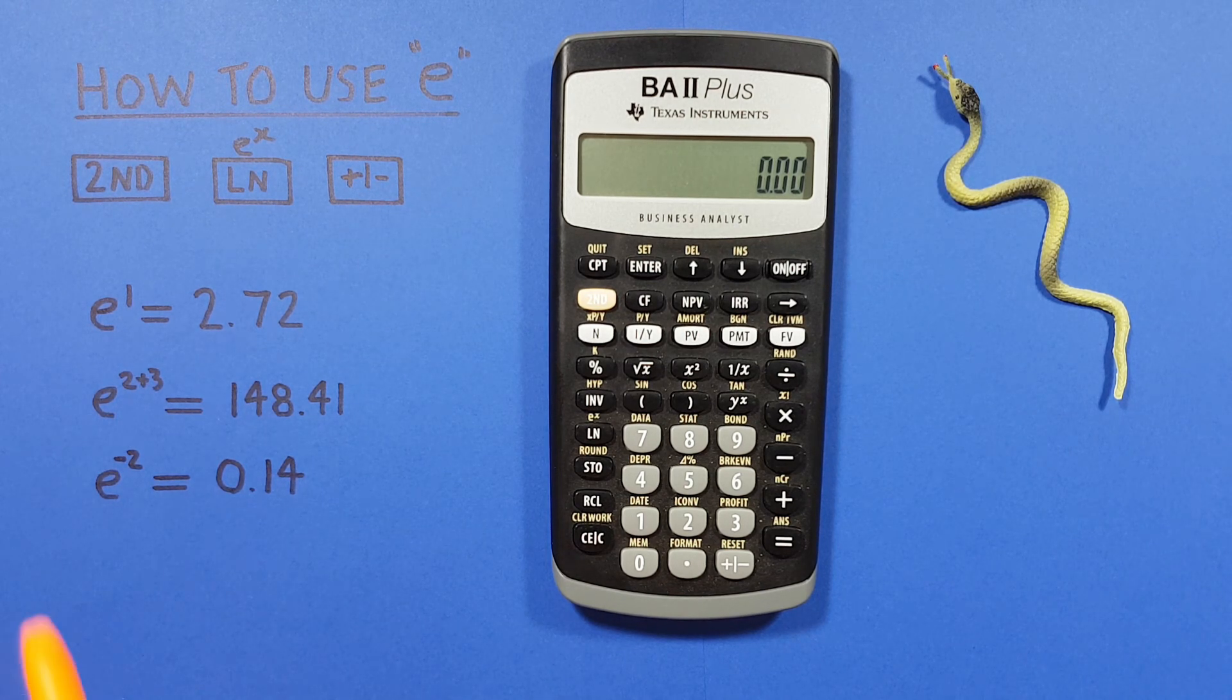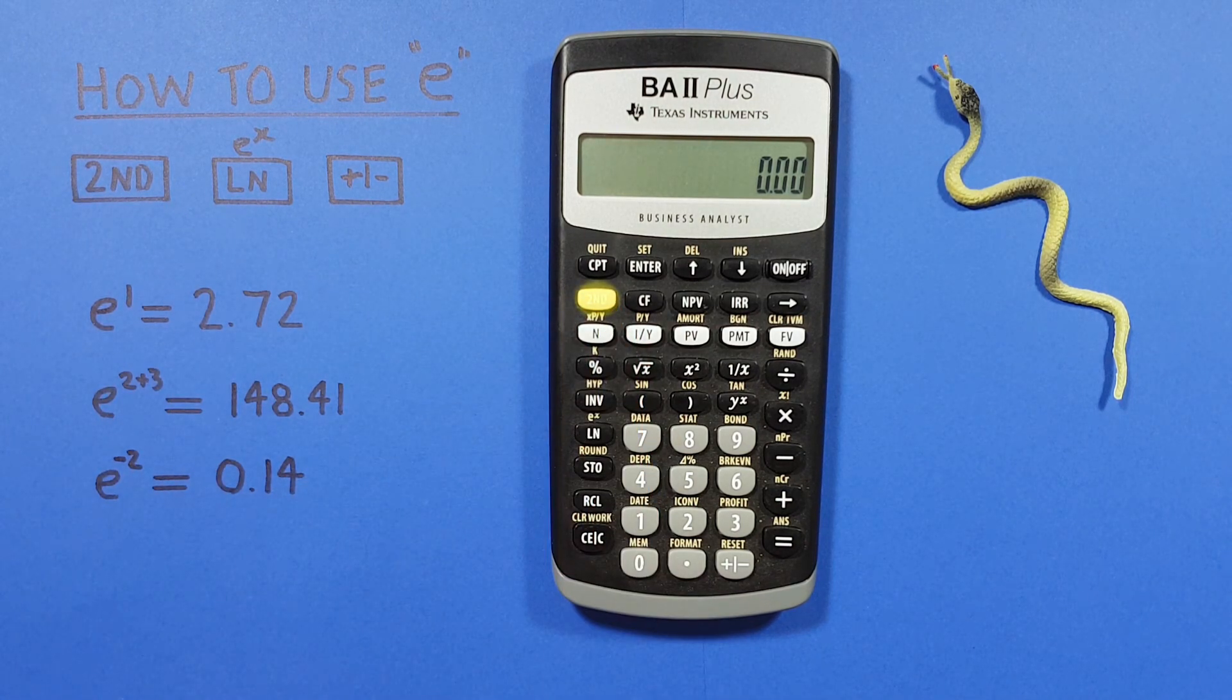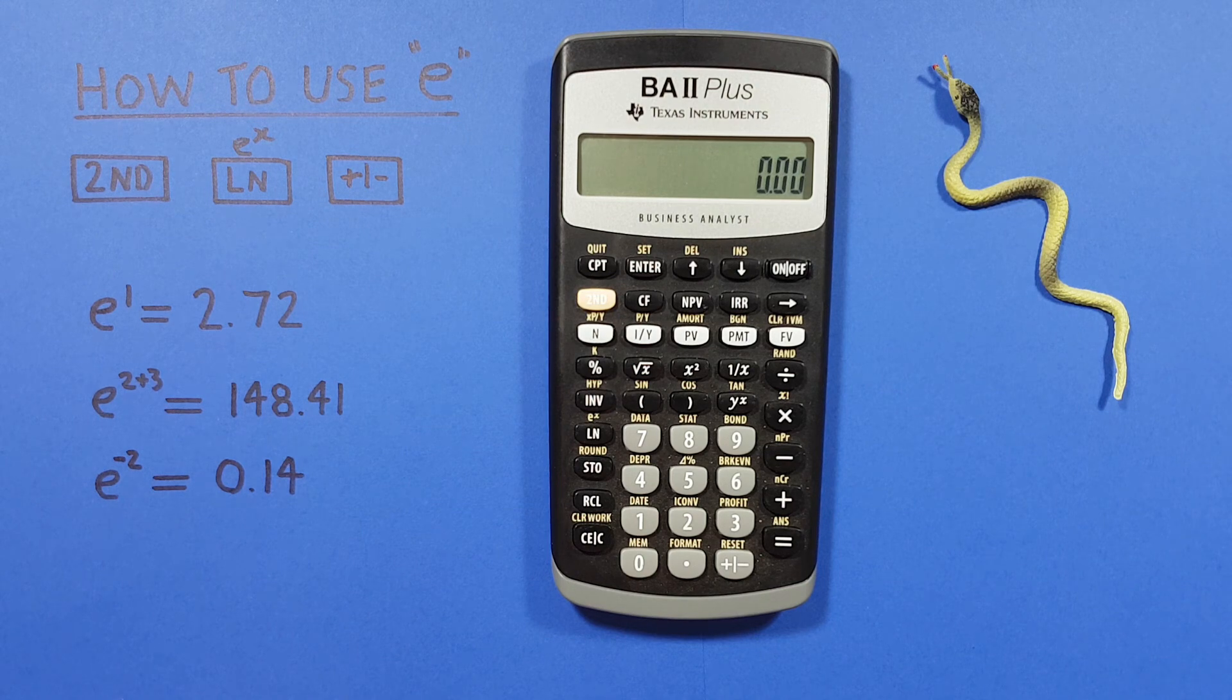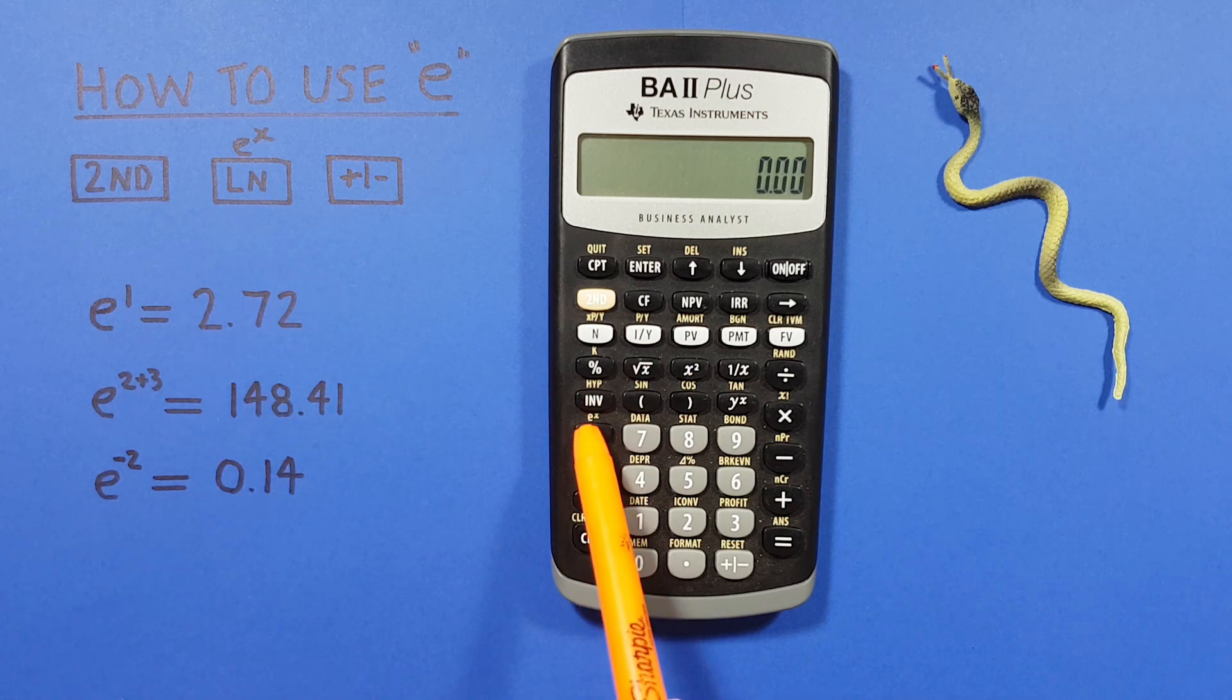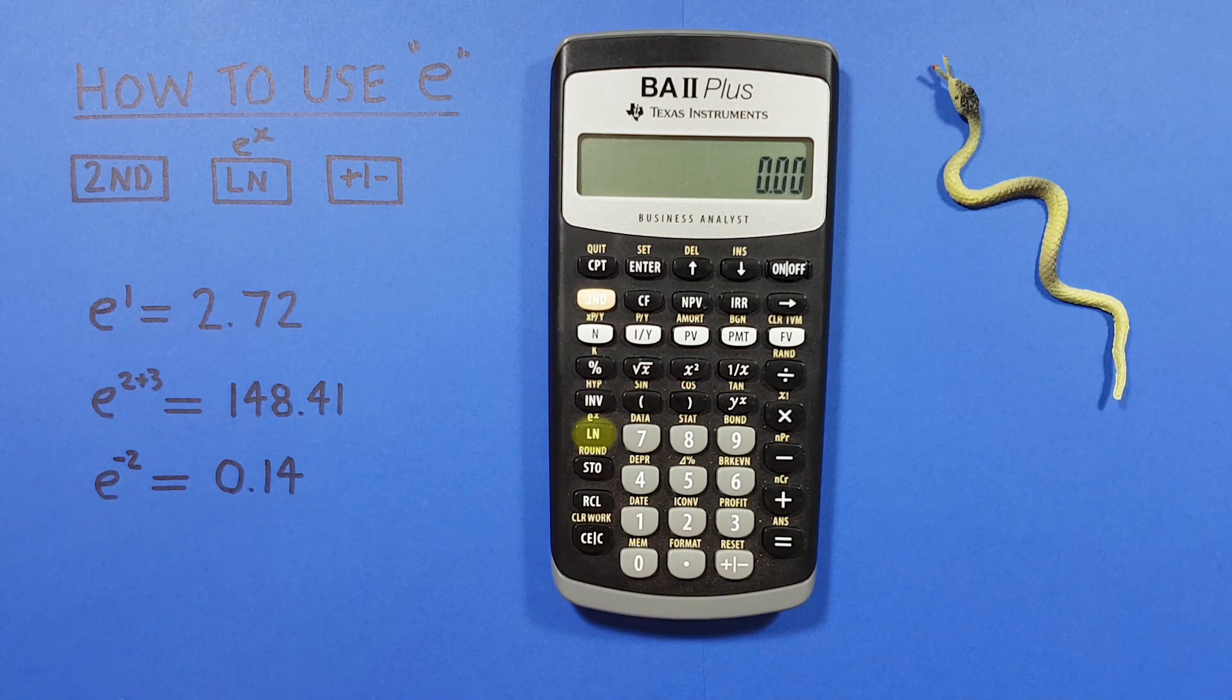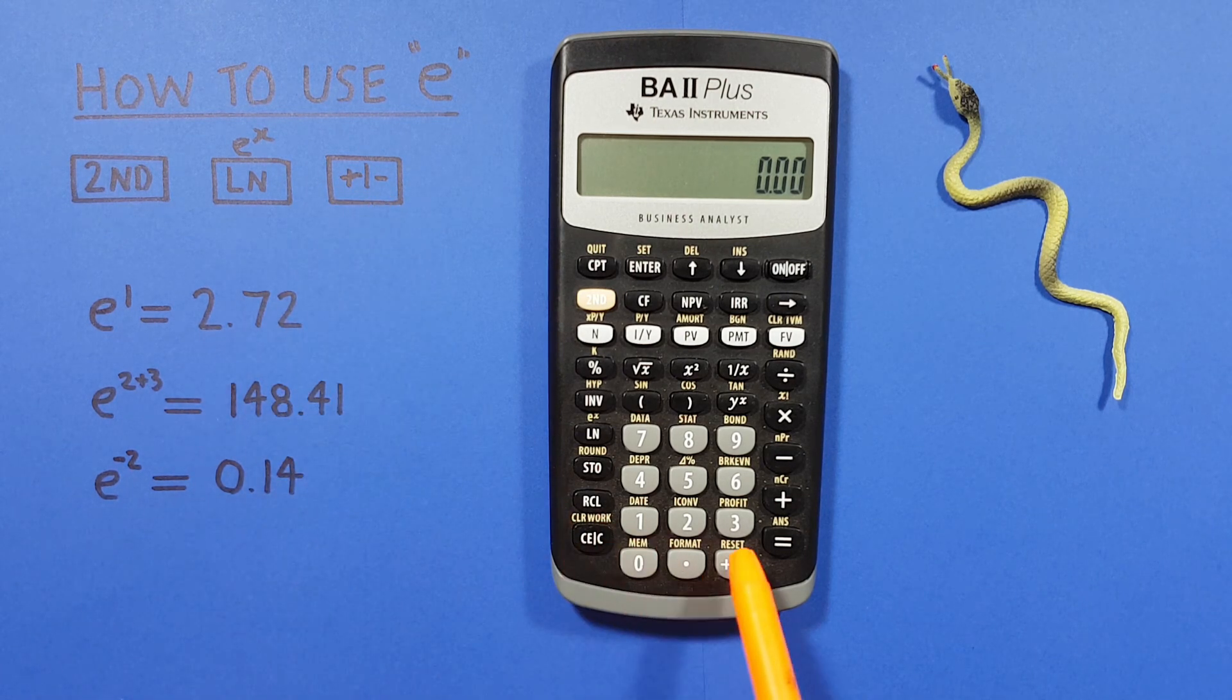To do this we'll use the second function key located here, the LN key with the second function of e to the power of x located here, and the positive negative key located here.